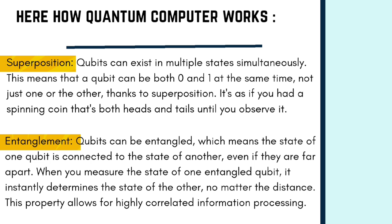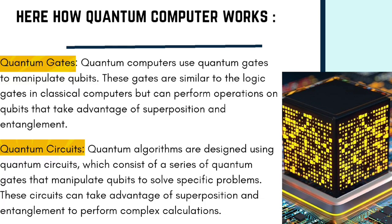The second concept is entanglement, which is very important to understand quantum physics. Qubits can be entangled, meaning the state of one qubit is connected to the state of another even if they are very far apart. When you measure the state of one entangled qubit, it instantly determines the state of the other, no matter the distance. This property allows for highly correlated information processing. Third, quantum computers use quantum gates to manipulate qubits. These gates are similar to logic gates in classical computers but can perform operations on qubits that take advantage of superposition and entanglement.